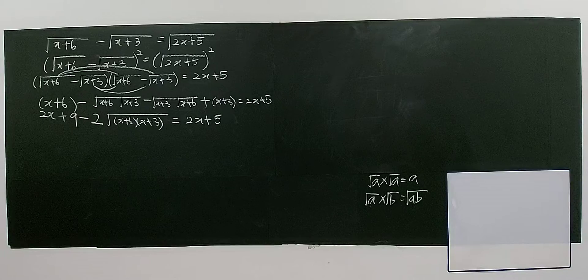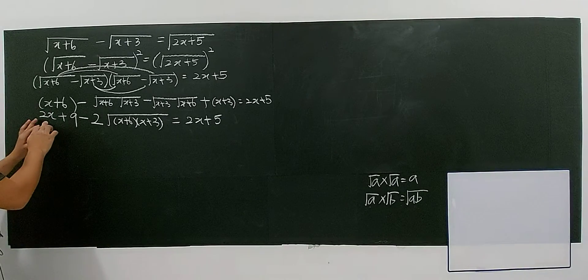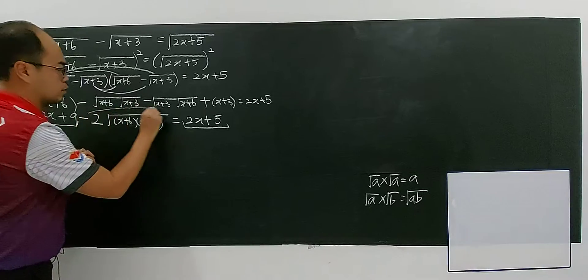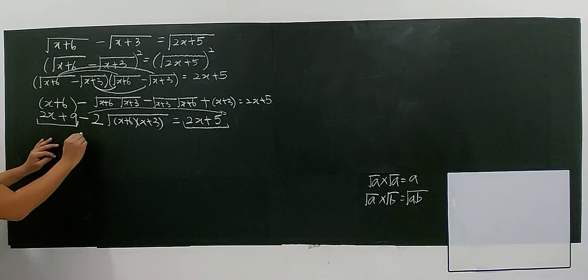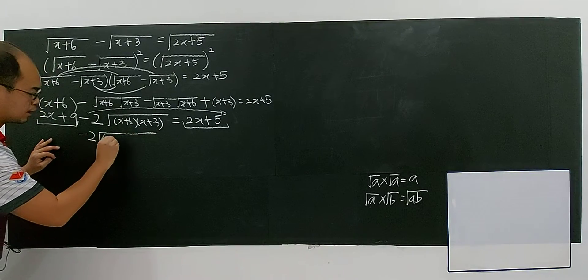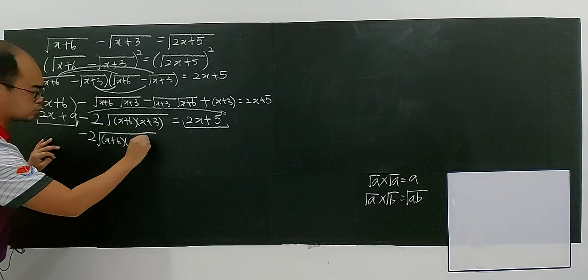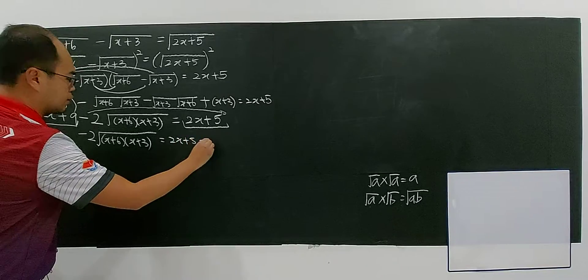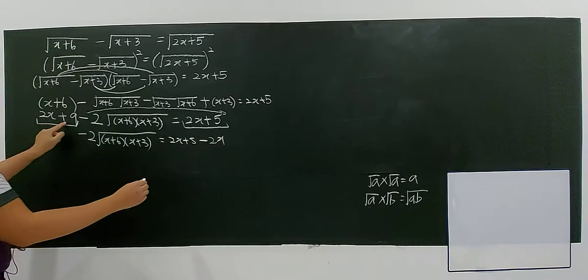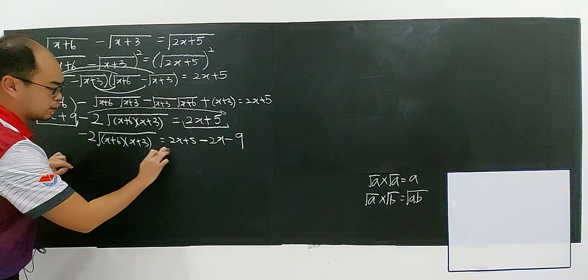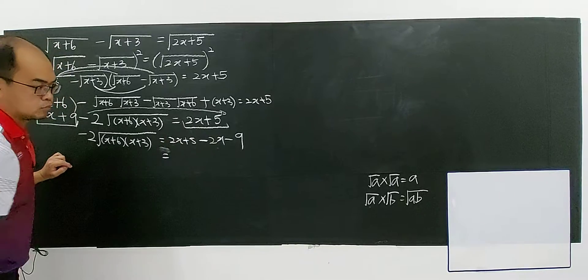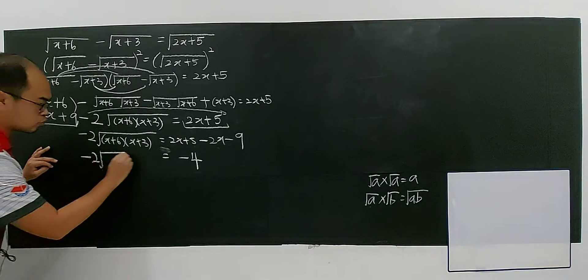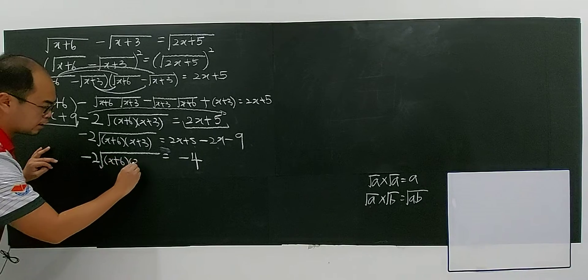Now we solve step by step. I bring 2x over to the right hand side, so I have negative 2 times square root of (x+6)(x+3) equals 2x plus 5 minus 2x minus 9. Then 2x minus 2x cancels, and 5 minus 9 gives negative 4. So negative 2 times square root of (x+6)(x+3) equals negative 4.